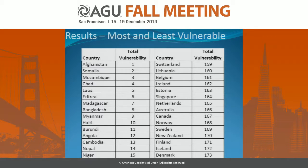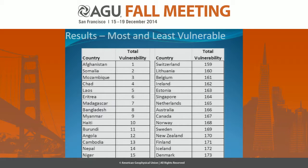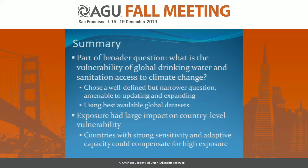Looking at the top 15 in terms of vulnerability and the bottom 15: those most vulnerable to loss of drinking water access include Afghanistan, Somalia, Mozambique, Chad — countries with a lot of conflict and poor economic conditions. Bangladesh appears at number eight; their protected wells provide decent resilience but they're still highly exposed to hazard events. On the least vulnerable side, you see many northern European countries, with New Zealand, Australia, and Singapore also appearing. Not many surprises in our model results, which is arguably a good thing — the results are somewhat intuitive.